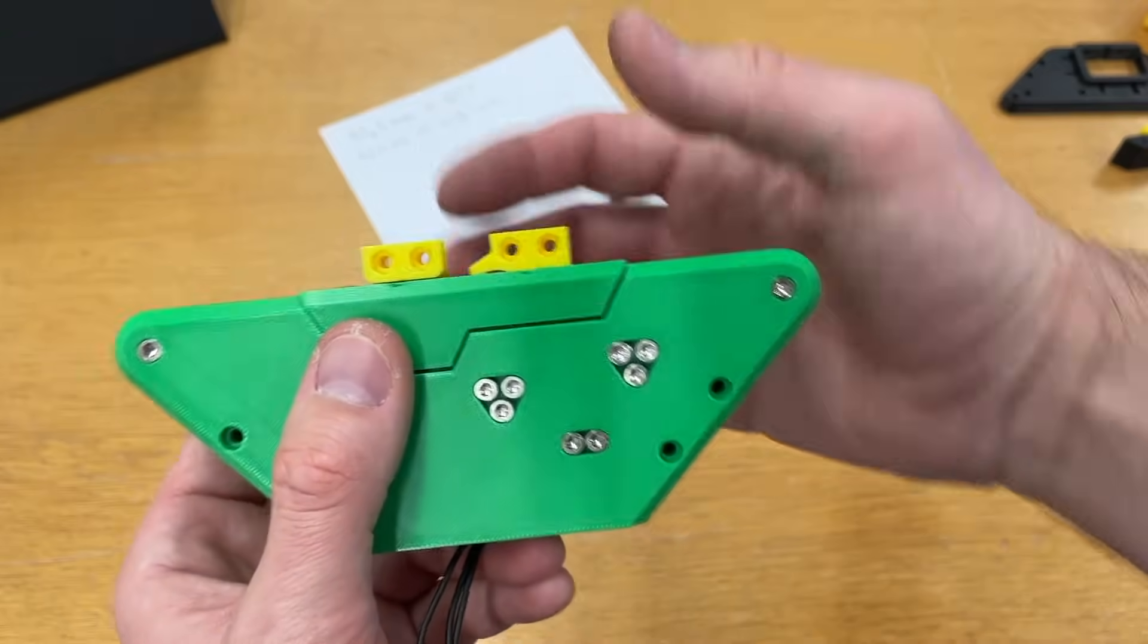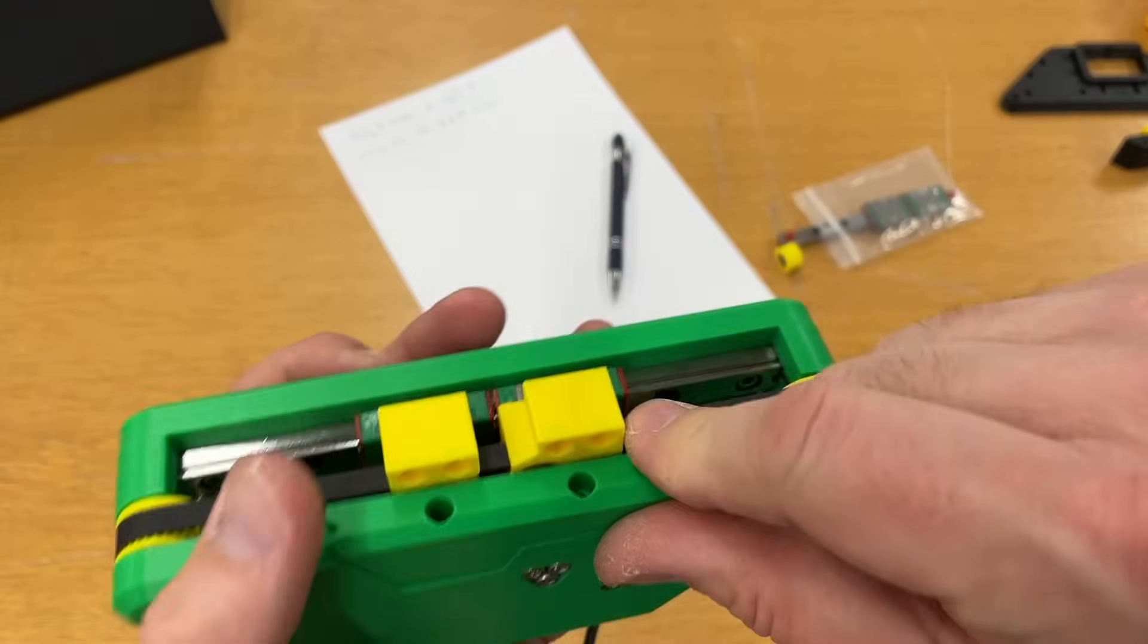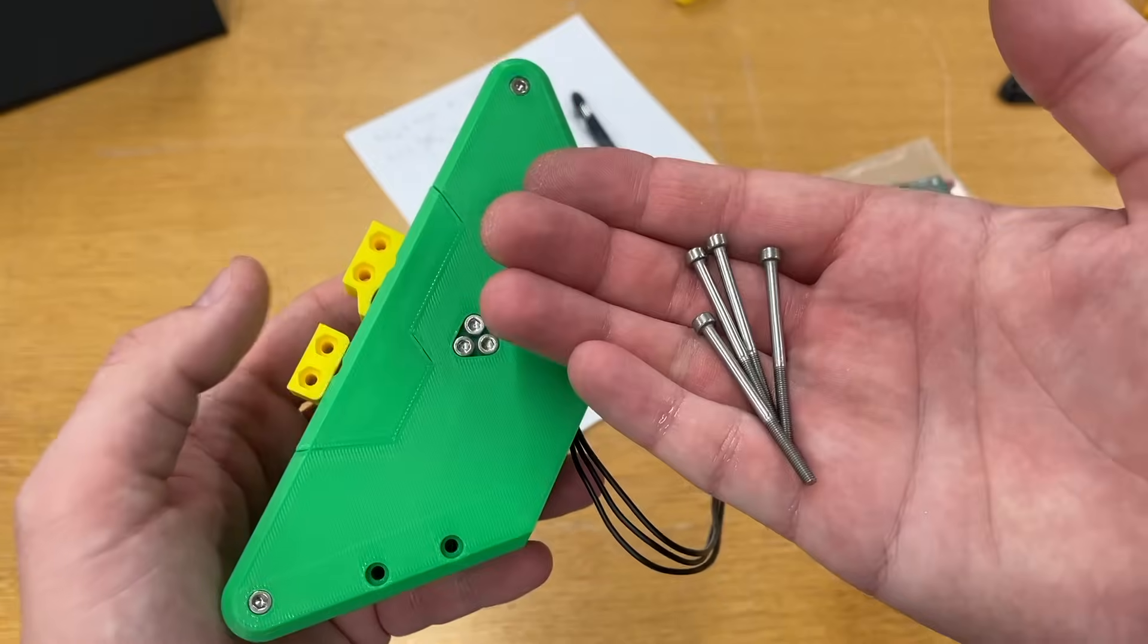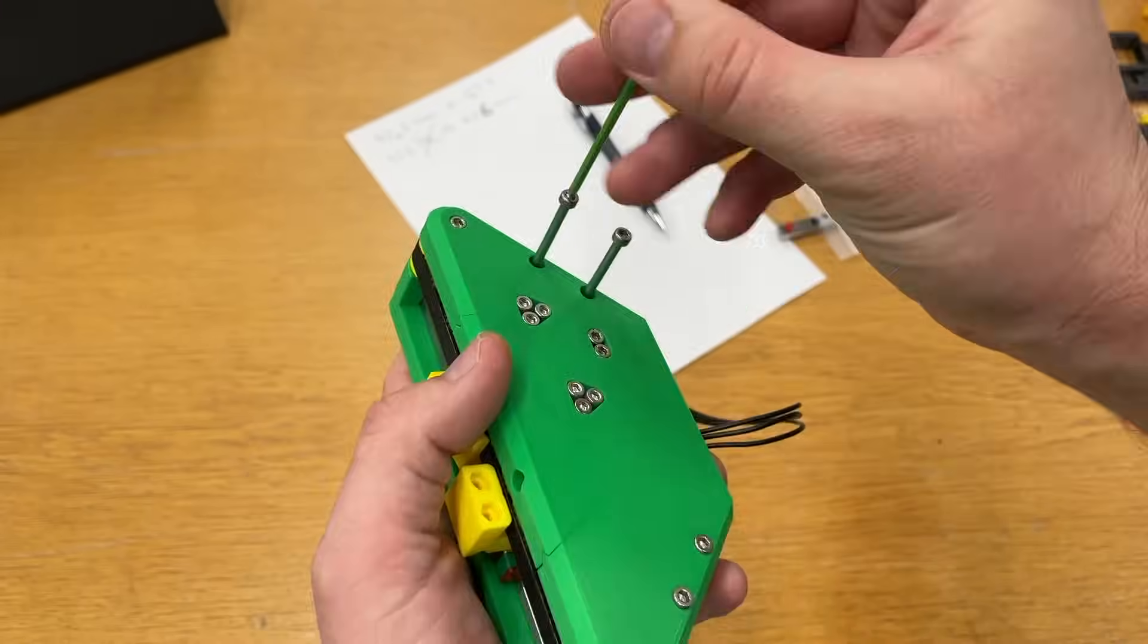We just need to put the fingers. To fix this part I need 12 millimeter long screws. The nuts are already installed. 40 millimeter long screws will fix this base to the gripper. Perfect. And over here you can see how it works.